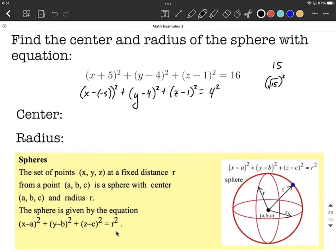From here, picking out our ordered triple, that's going to be whatever value is being subtracted from x, so negative 5, the value with y, and the value with z.